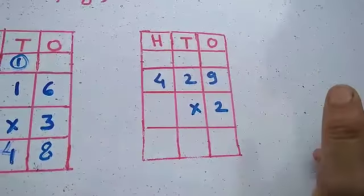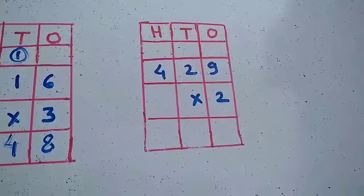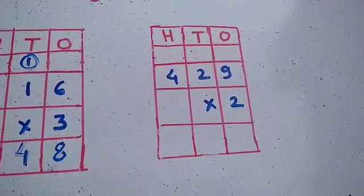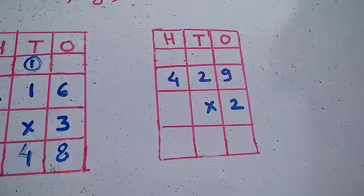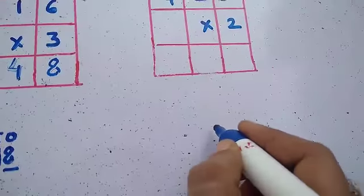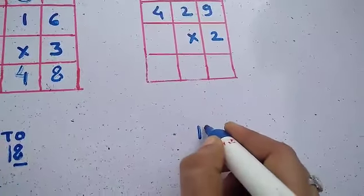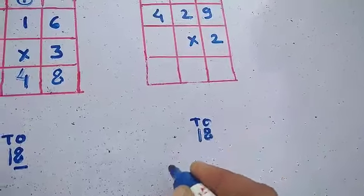What is 2 nines are? Reciting 2's table: 2 ones are 2, 2 twos are 4, 2 threes are 6, 2 fours are 8, 2 fives are 10, 2 sixes are 12, 2 sevens are 14, 2 eights are 16, 2 nines are 18. Now 18 is 1 ten, 8 ones.